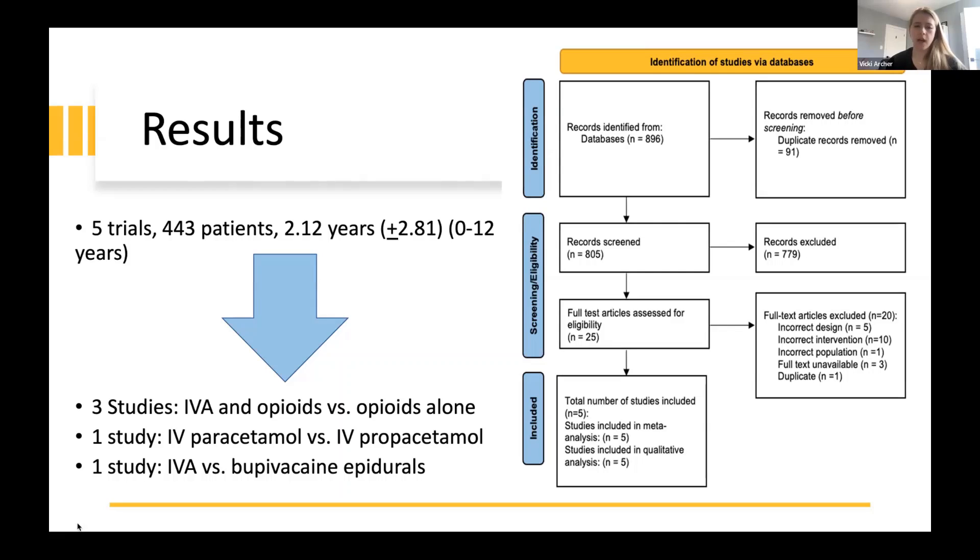Three studies compared intravenous acetaminophen and opioids to opioids alone. One study compared IV paracetamol, which is just another way to say acetaminophen, to its pro-drug form, pro-paracetamol, and one compared intravenous acetaminophen to bupivacaine-based epidurals. Due to the heterogeneity of the comparators, it wasn't methodologically feasible for us to pool all five of these studies together, but we were able to pool the results of the opioid-based studies, and then we'll narratively present the results of the other two studies.